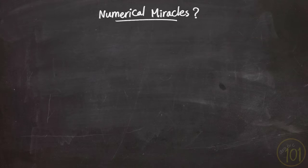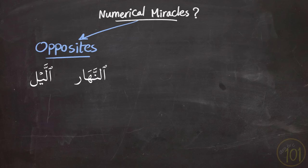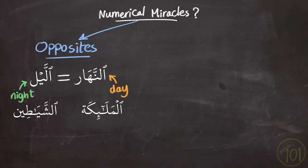Like the fact that opposites are mentioned the same number of times. Like the word al-layl, which means 'the night,' and an-nahar, which means 'the day.' And so do al-mala'ika, 'the angels,' and ash-shayateen, 'the devils.'